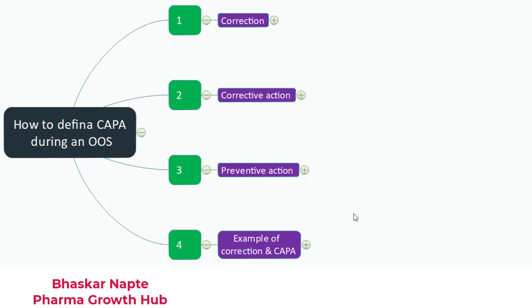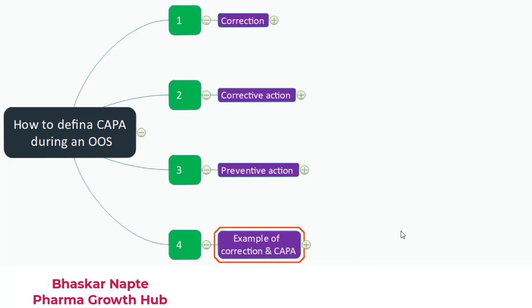Hello and welcome. This is Bhaskar Napte from Pharma Growth Hub. In today's video we are going to talk about three very important terms: what is meant by correction, what is meant by corrective action, and what is meant by preventive action. I am also going to explain these three terms with the help of suitable examples, because examples help us in understanding the real meaning of the terms.